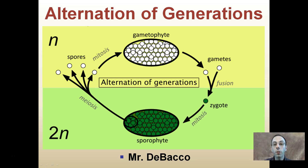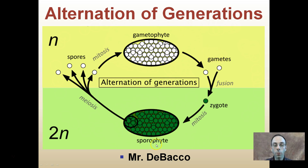This video is on the alternation of generations in plants. This topic can commonly trip students up. The key parts we want to look at are the gametophyte phase and the sporophyte phase. Remember: gametophyte means producing gametes, and sporophyte means producing spores. That'll help you with the initial potential for confusion.